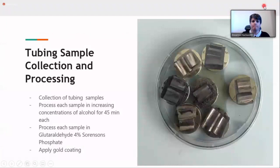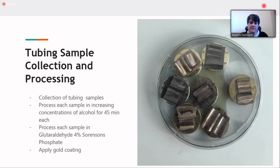The tubing sample and collection process—off to the right-hand side, you can actually see our sample of tubings that we took. We would have to process each sample in increasing concentrations of alcohol. The reason that you had to do it in slow increments of increasing alcohol—if you were to put it in too high of a concentration, the cell integrity would actually be compromised due to the alcohol pulling fluids out of those cells. So we put it in increasing concentrations of alcohol and we processed them in glutaraldehyde and then applied a gold coating per SEM protocol.